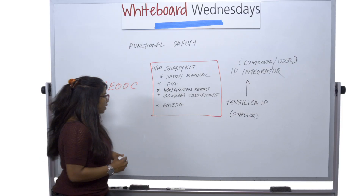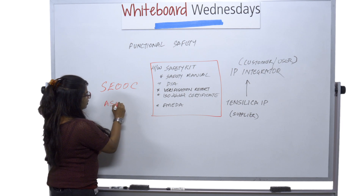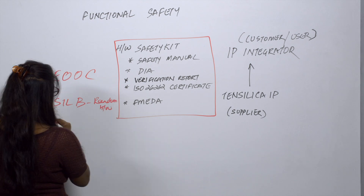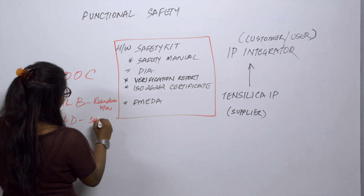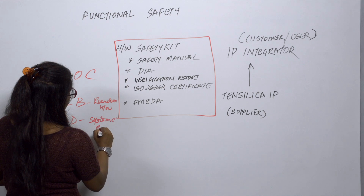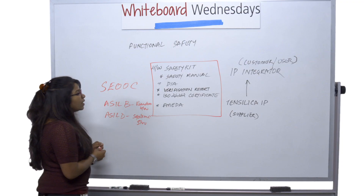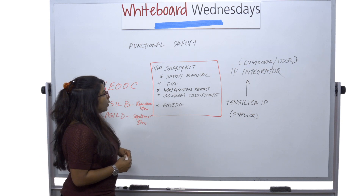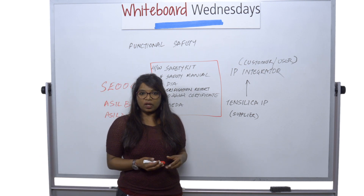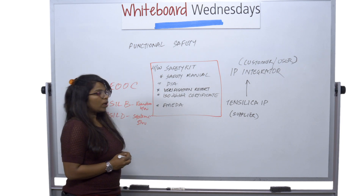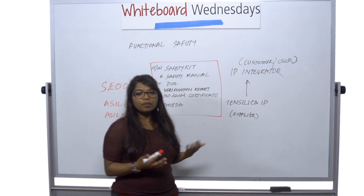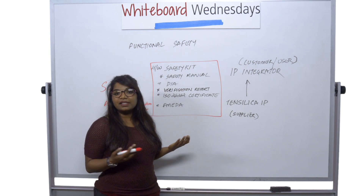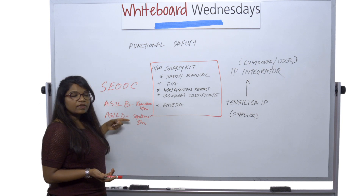We developed the SEooC for ASIL-B random hardware and ASIL-D systematic software failures. Once this SEooC was developed targeting these ASIL metrics, we finished all the work products necessary for each of these. A work product is a piece of evidence that tells that we have taken care of everything the standard requires us to do for each of these safety metrics.